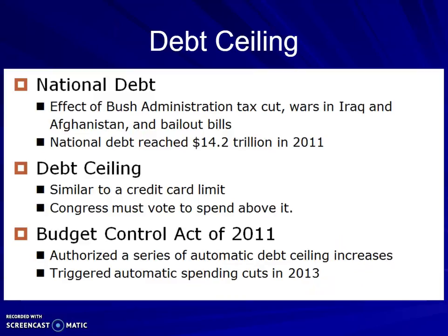When we look at the debt ceiling — during the Bush administration we had tax cuts, wars in Iraq and Afghanistan, and then bailout bills. Our debt had reached $14.2 trillion by 2011. The debt ceiling is, for lack of a better explanation, kind of like a credit card limit. Just like with a credit card, if you want to spend above your limit, you've got to ask, and they can either increase your limit or not. Congress can vote to spend above it if they want to.